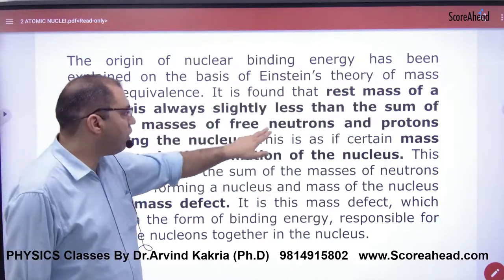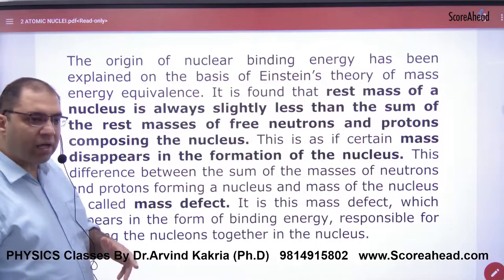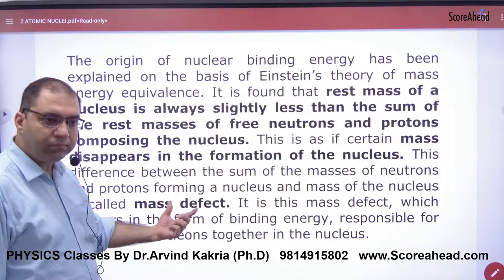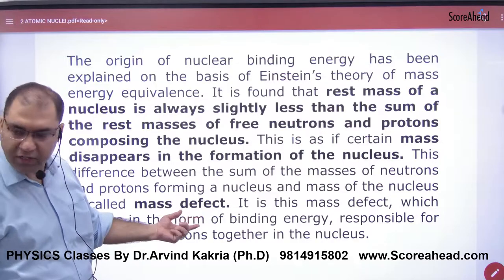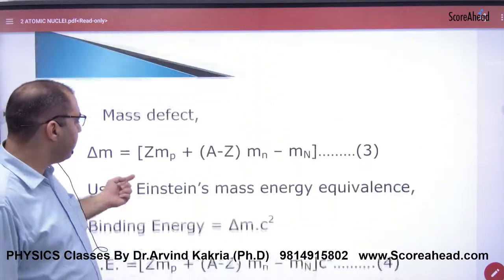As it is written in bold: rest mass of a nucleus is always slightly less than the sum of rest mass of free neutrons and protons. This difference in mass is called mass defect.